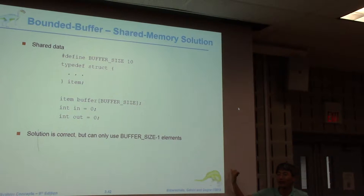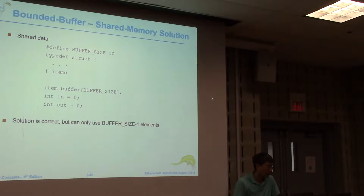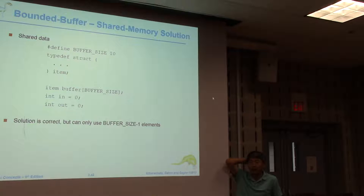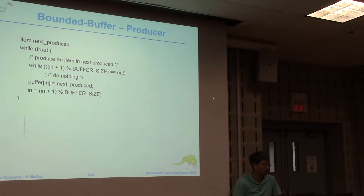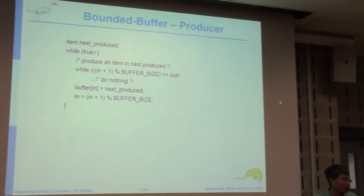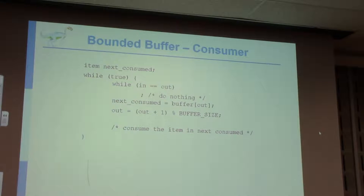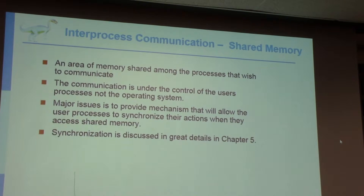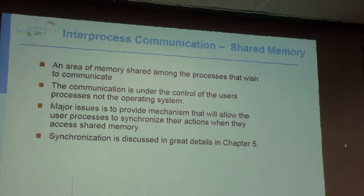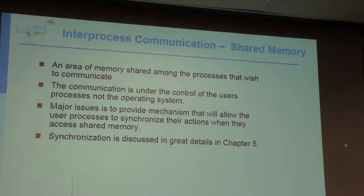The producer-consumer model involves a data structure — a buffer. This is the simplified shared data structure. If you add data, the buffer size is reduced. The producer puts data in and the buffer size decreases. The consumer reads the data and the buffer size increases. This can be implemented using shared memory as the buffer.